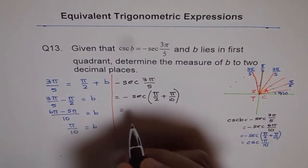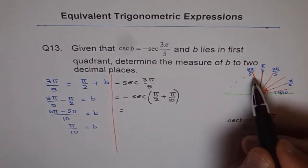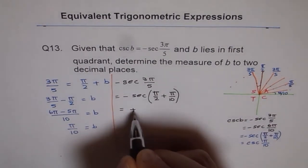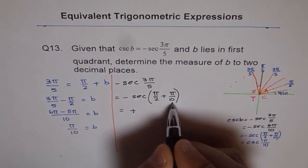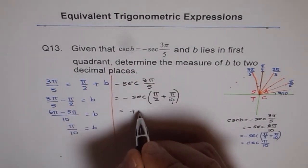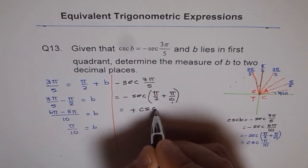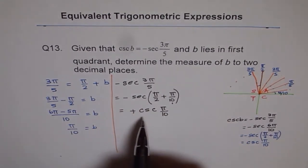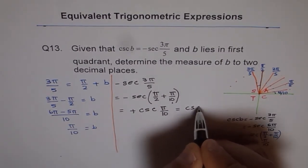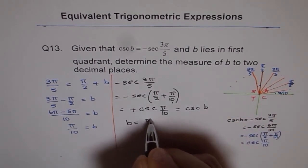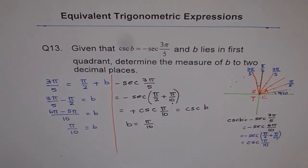And that is equals to, secant in this will be negative. But negative of negative is positive, because we are writing in terms of the related acute angle where everything is positive. Do you see? Positive of cosecant π/10. Since it is given, this is equal to cosecant B. That means B is equals to π/10. So we get our same answer as π/10.